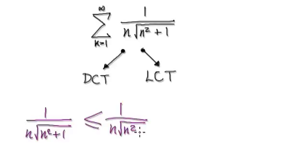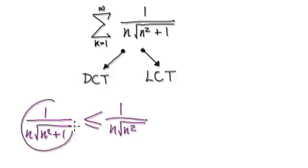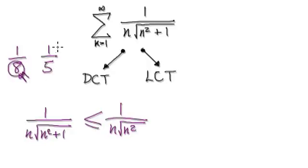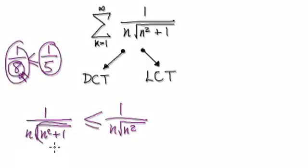If you remove the 1, then this whole thing will be bigger than or equal to this thing here. Because if you look at 1 over 8, and you make the denominator smaller by taking away a number like 3, you get 1 over 5, which is bigger. So by making the denominator smaller, the whole fraction becomes bigger than the original expression.